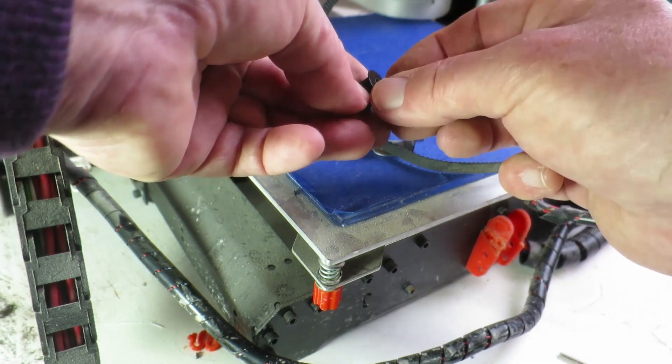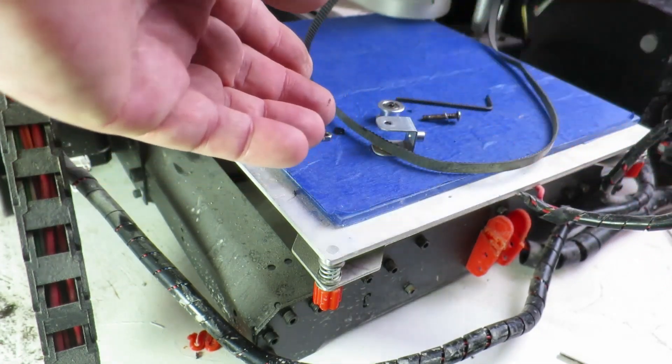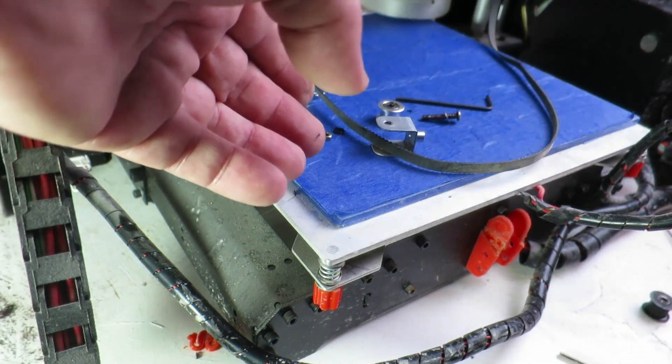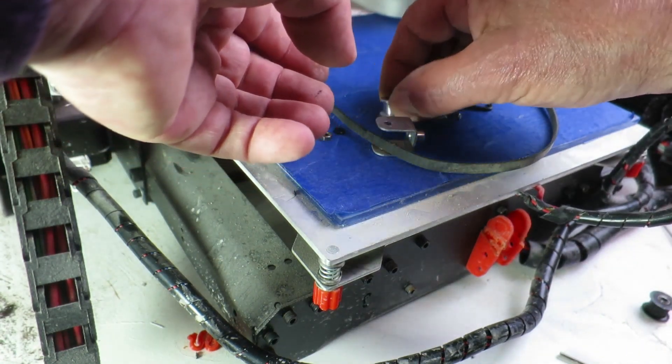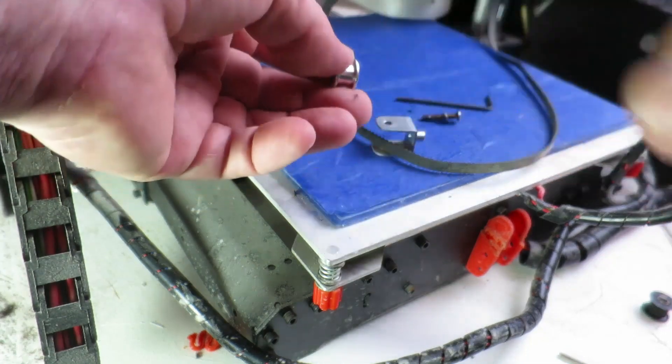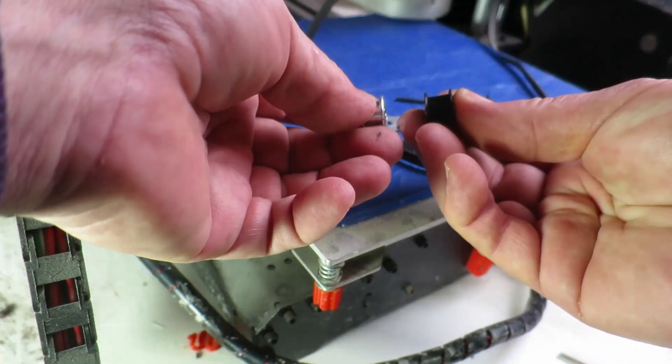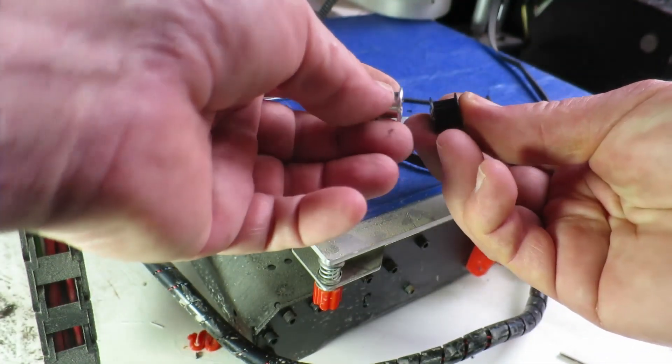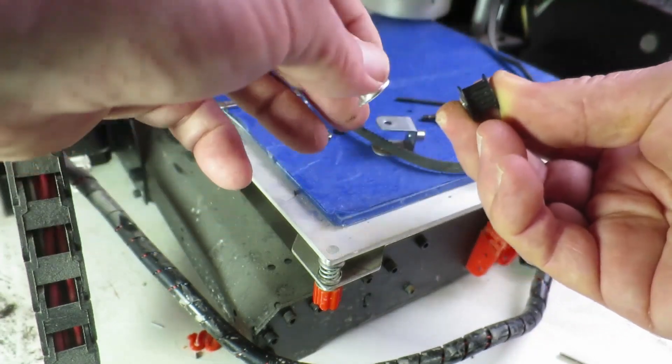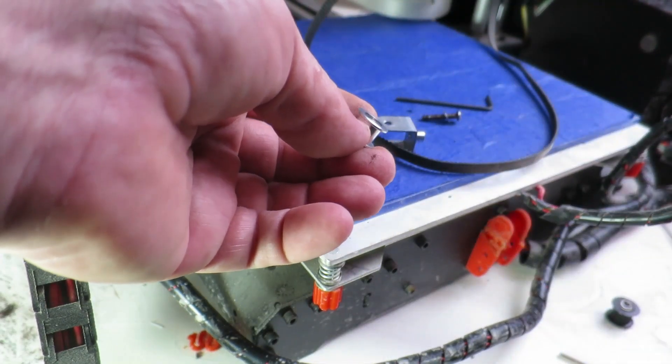That is literally falling apart there. We might take a look at that under the microscope. The replacement bearing you'll notice doesn't have the teeth on it. I didn't really see any point in having the teeth on here. It's not driving, it's only just holding that in place.